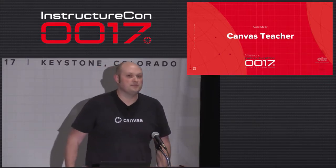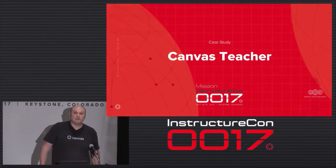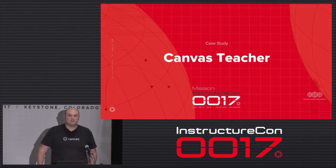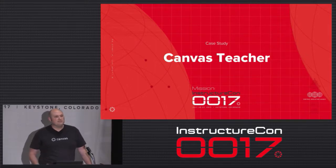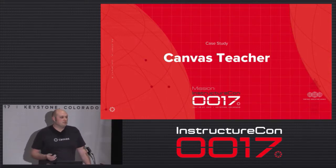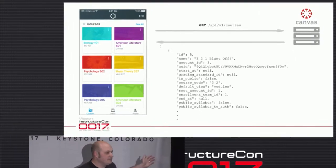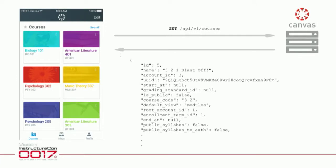Let's get into an example — the Canvas Teacher app, the new mobile app we just released, which was featured in yesterday's keynote. We're going to go through a very specific use case: a teacher wants to grade an assignment. I'm going to show you the API requests the application makes, which is hopefully a pattern you can follow or leverage in building an application yourself. Each slide will show you the view inside Canvas Teacher, the endpoint it's hitting on the Canvas API, and the initial JSON data coming back from the API.